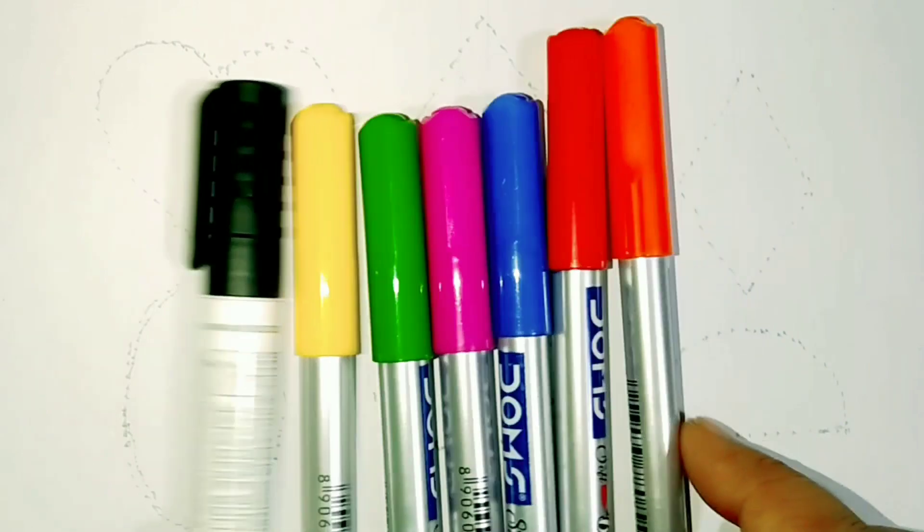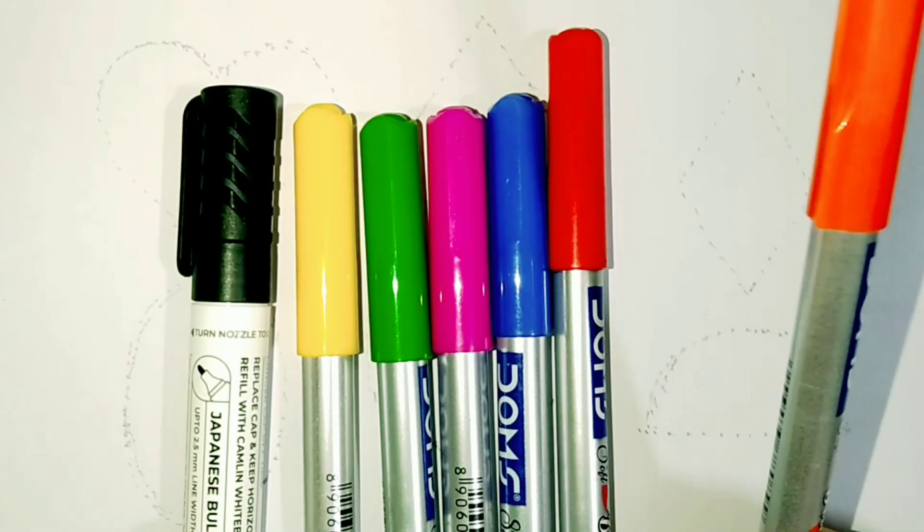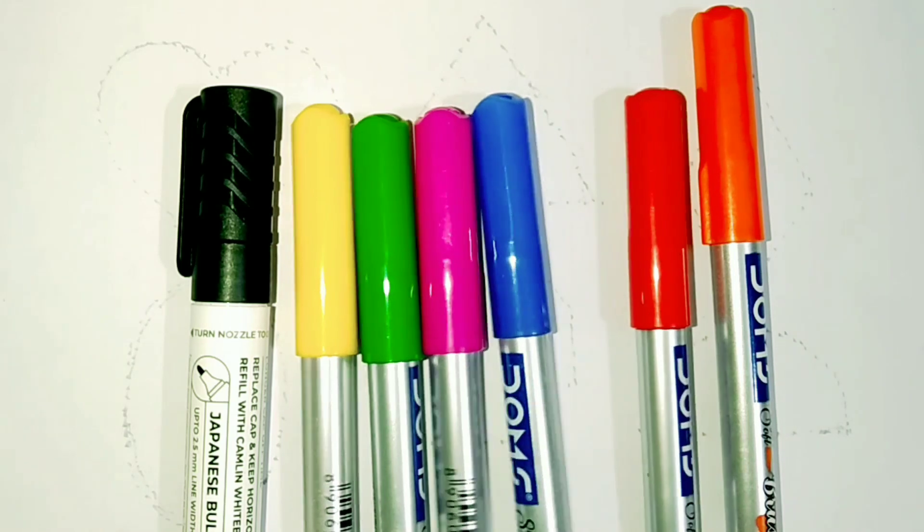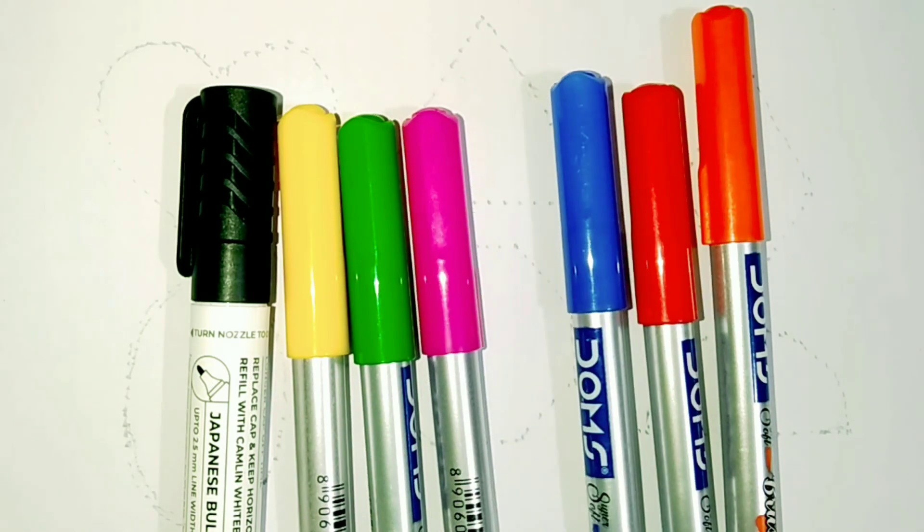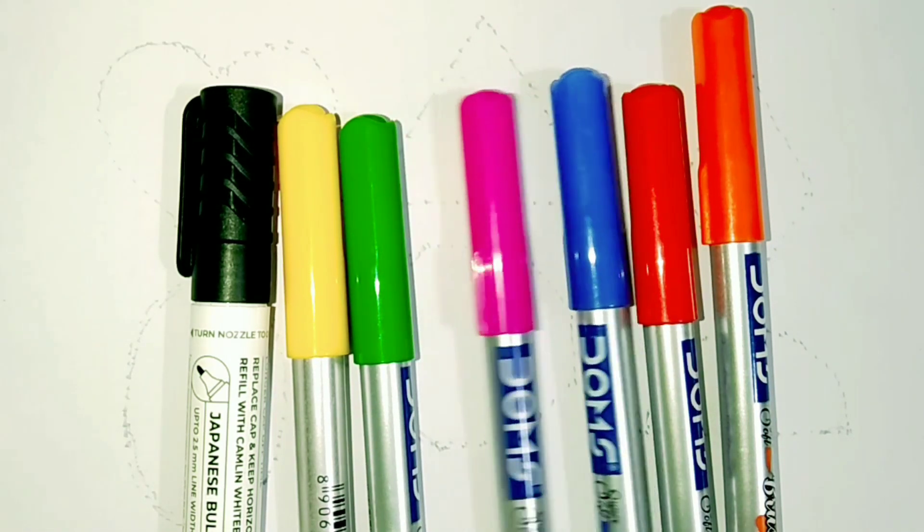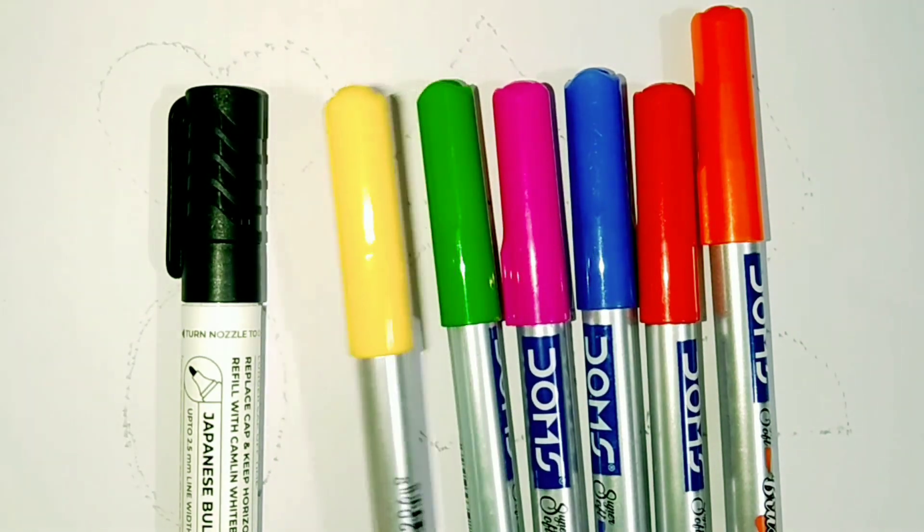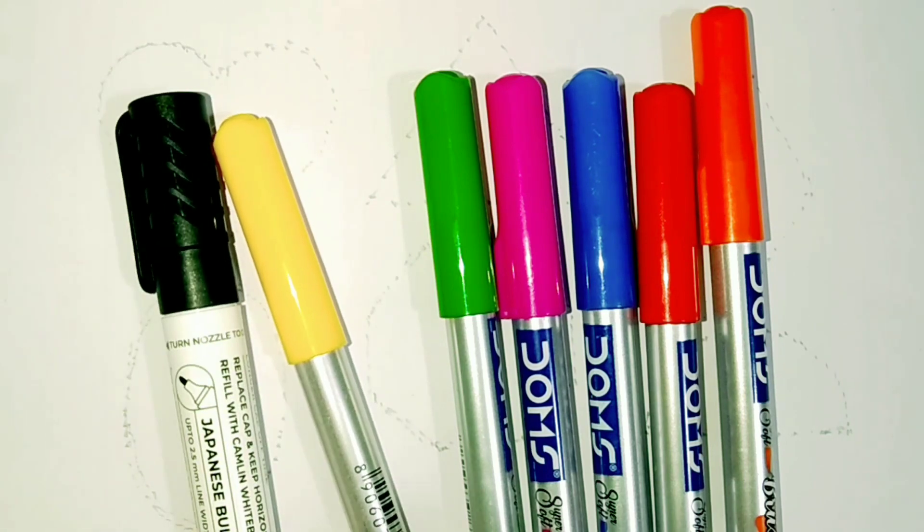These are 7 colors: orange, red, blue, pink, green, yellow, and this is a black color.